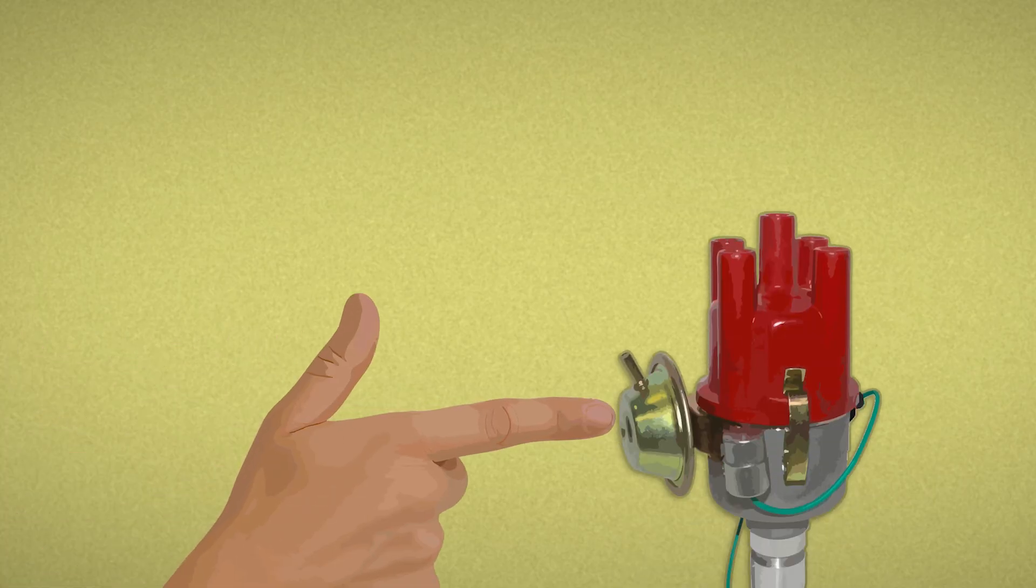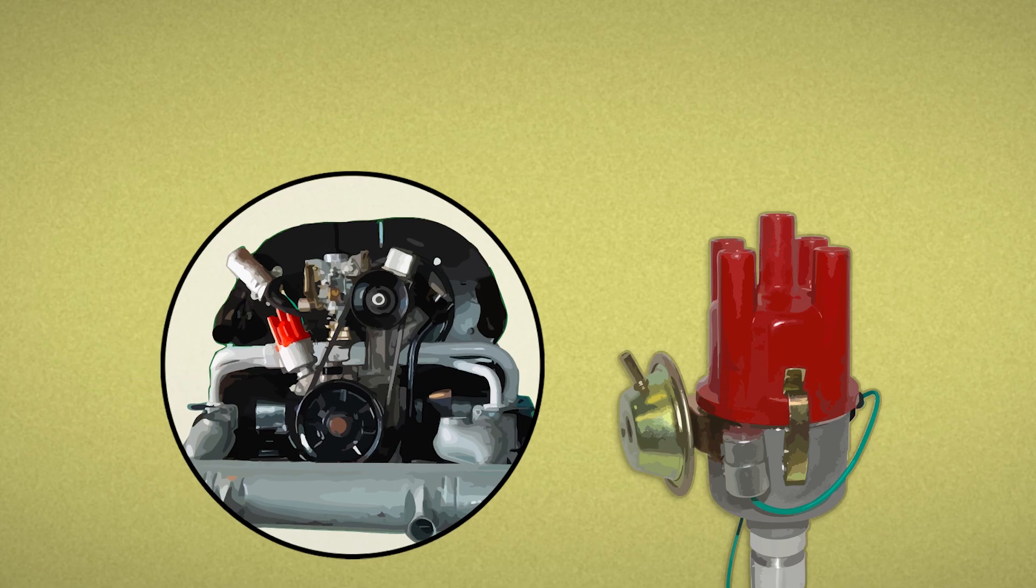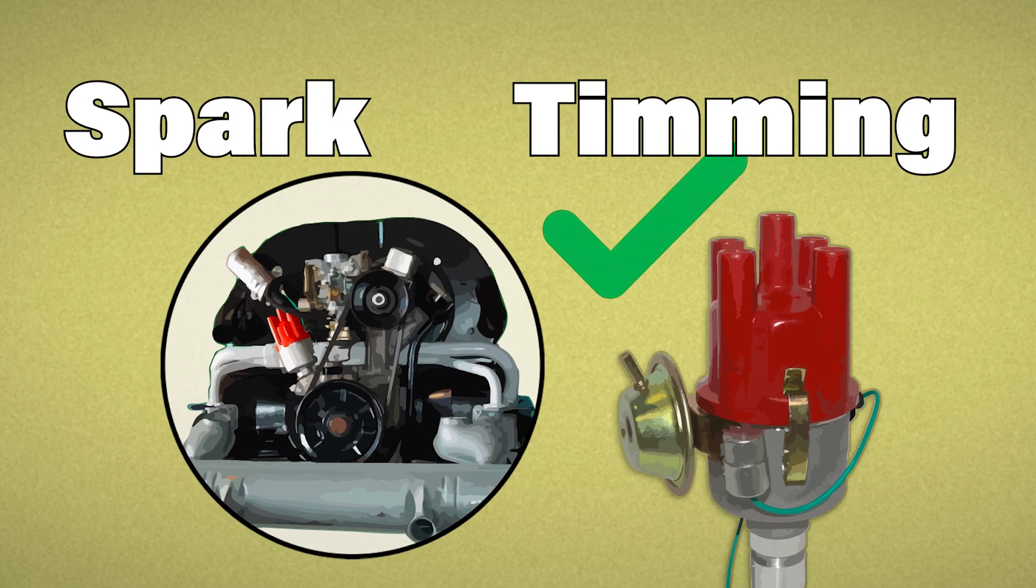This little pod, that's called Vacuum Advance. It helps your engine feel alive when you give it throttle, by adjusting the spark timing on the fly.